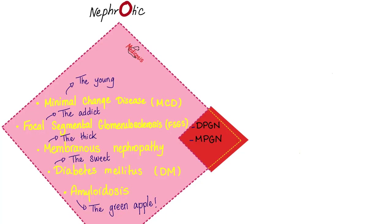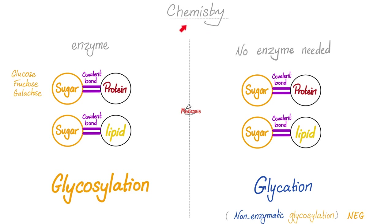Diabetes is so sweet — now get out your chemistry notebook. When you add a sugar to a protein and bind them together by a covalent bond thanks to the help of an enzyme, we call this process glycosylation. When you do the same thing without any enzymes, we call this glycation — also called non-enzymatic glycosylation. This is the difference between glycosylation with an enzyme and glycation with no enzyme. So if your professor says 'non-enzymatic glycation,' that's redundant, because glycation is always non-enzymatic by definition.